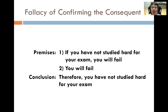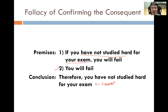The second is the fallacy of confirming the consequence. Premise 1: if you have not studied hard for your exam, you will fail. What we wish to confirm is that someone has not studied hard for the exam, so we say Premise 2: you will fail, therefore you have not studied hard for your exam. Again, this is not true — you can study hard and still fail. This is the fallacy of confirming the consequence: you want the consequence to be true and try to construct an invalid argument to confirm it.